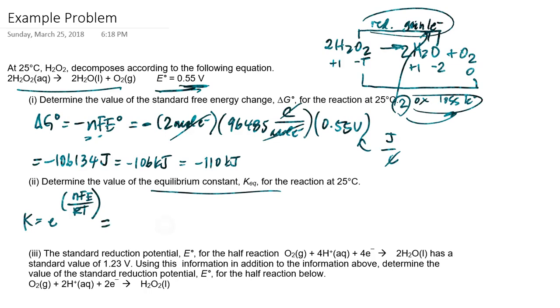Now, if you take a look at the previous part, we already calculated what nFE is. Basically, it would be the absolute value of this number, so that would be 106,134 joules. Then R would be 8.314 joules per mole Kelvin. And T, since we're calculating at 25 degrees Celsius converted to Kelvin, that would be 298 Kelvin. And so if I go ahead and do this math, I get 4.02 times 10 to the 18th.